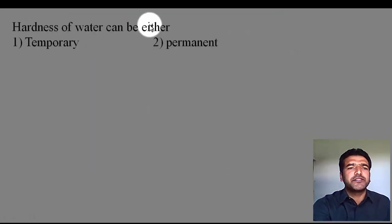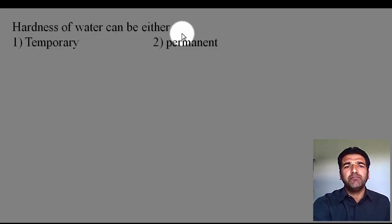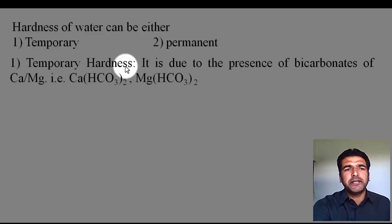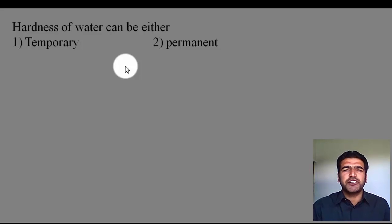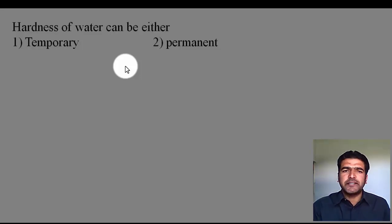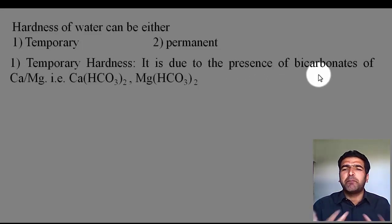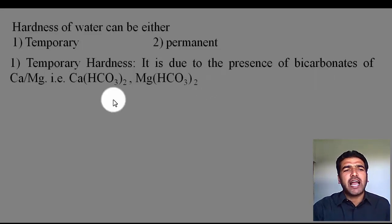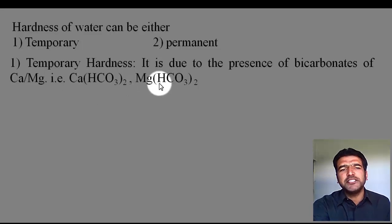Now we will discuss types of hardness. Hardness is of two types: temporary hardness and permanent hardness. Before explaining the terms, I want to remind you that hardness of water is due to three kinds of salts — calcium and magnesium salts of bicarbonates, sulfates, and chlorides. Temporary hardness is due to the presence of bicarbonates. So the hardness which is due to bicarbonates of calcium and magnesium — calcium bicarbonate and magnesium bicarbonate — is called temporary hardness.